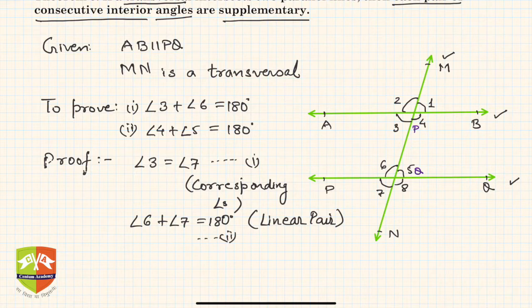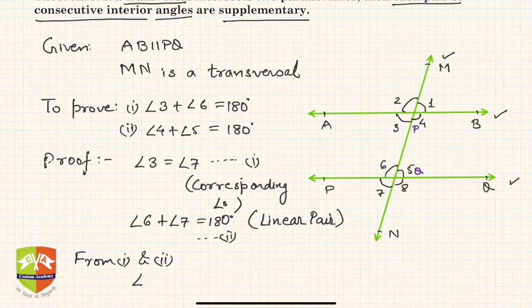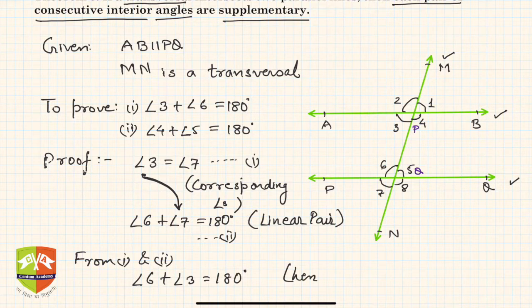From statements one and two, we can replace angle 7 with angle 3. Hence, angle 6 plus angle 3 equals 180 degrees. So the first part is proved.